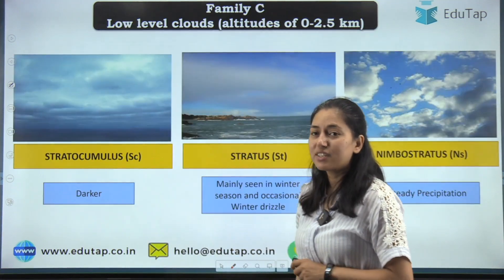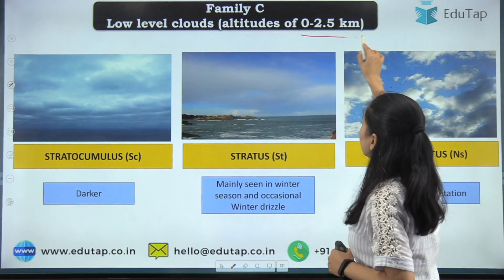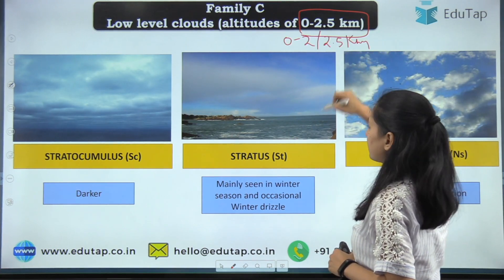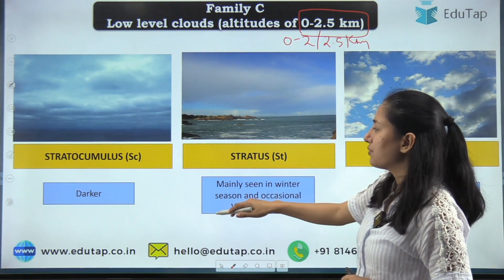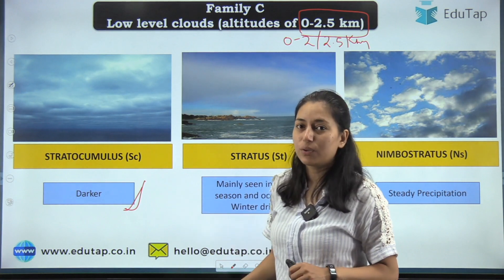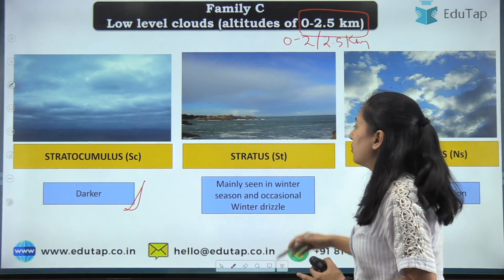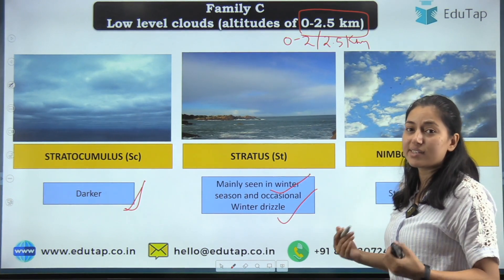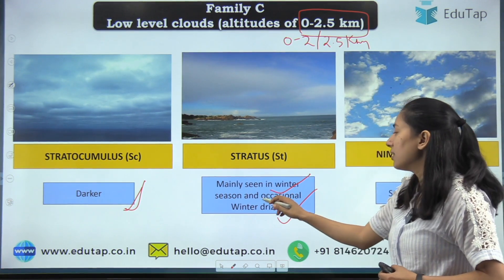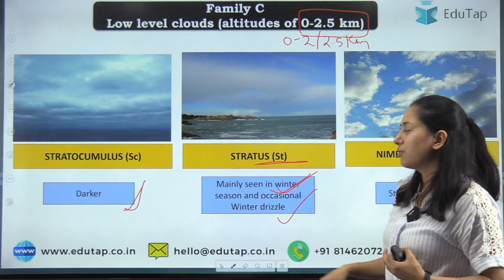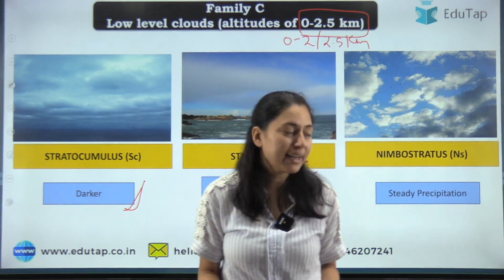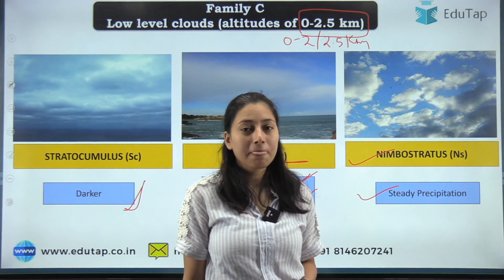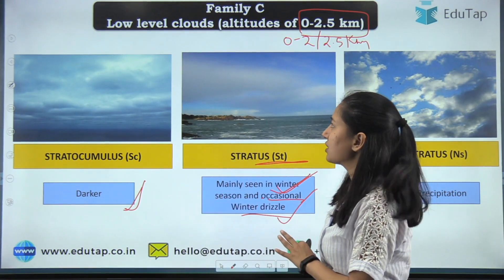Moving on to Family C — low-level clouds with altitude 0 to 2 kilometers. Under this we have three types. First, stratocumulus: they are darker in appearance. Next, stratus: these clouds are mainly seen in winters and are responsible for occasional drizzle. Then nimbostratus: they are responsible for steady precipitation.